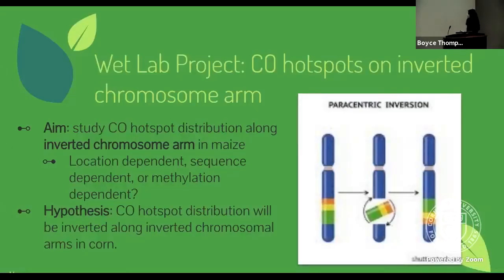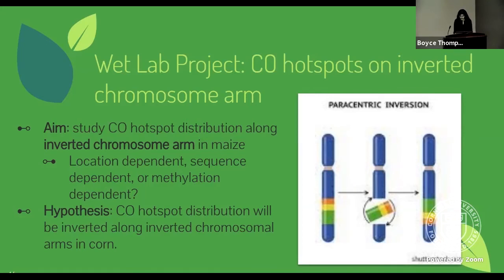The next project was more of a wet lab project. In this project, I studied crossover hotspots on an inverted chromosome arm. An inverted chromosome arm is a mutation where a segment of a chromosome arm is completely reversed — in our case, we reversed an entire arm. We wanted to answer whether hotspot location is location dependent, sequence dependent, or methylation dependent. Our hypothesis was that the hotspot distribution would be inverted along the chromosome arm.